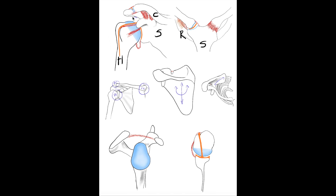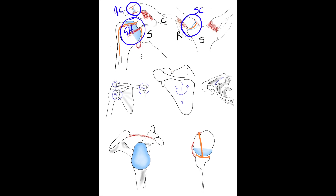The shoulder girdle is composed of three synovial joints: the glenohumeral joint, the acromioclavicular joint, and the sternoclavicular joint. We will review these structures from anterior, posterior, lateral, medial, and transverse viewpoints.